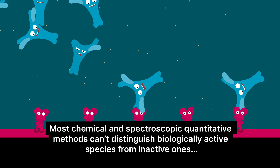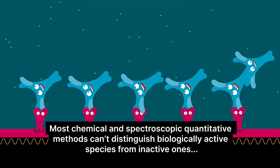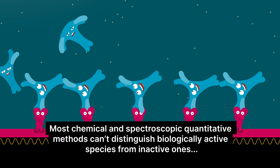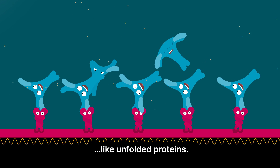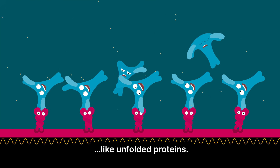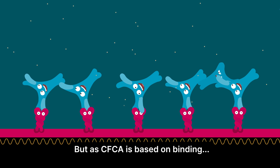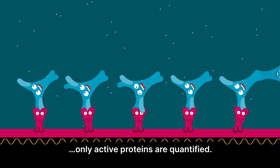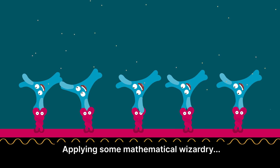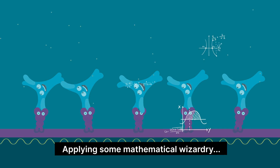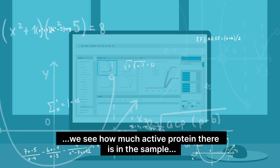Most chemical and spectroscopic quantitative methods can't distinguish biologically active species from inactive ones, like unfolded proteins. But as CFCA is based on binding, only active proteins are quantified. Applying some mathematical wizardry, we see how much active protein there is in the sample.